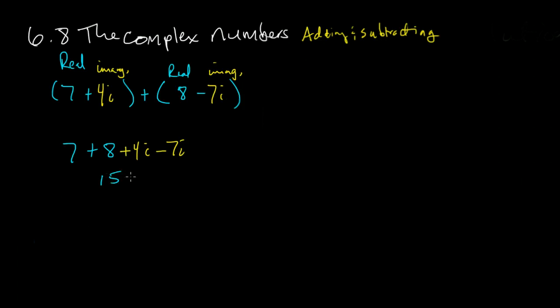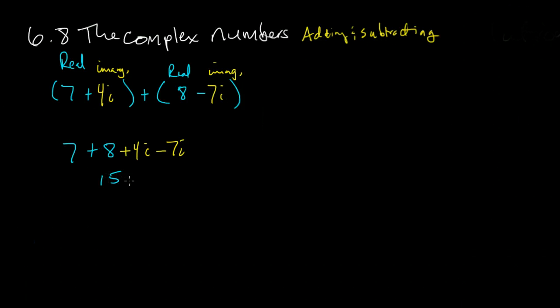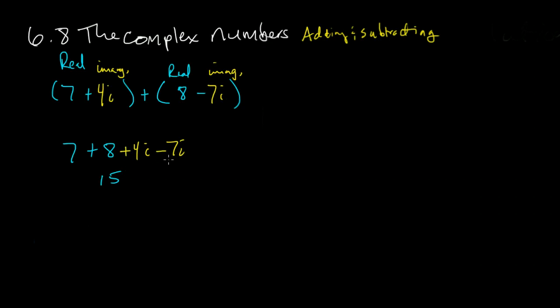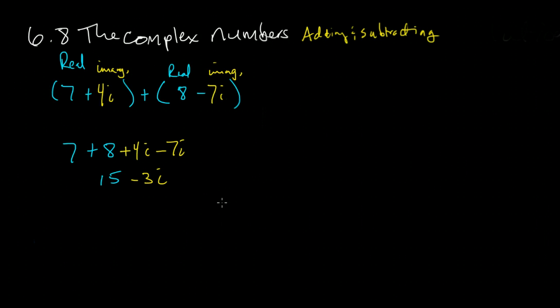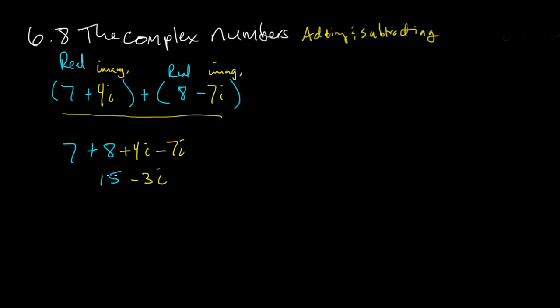And so it's a lot easier to look at them this way and say, well, 7 plus 8 is 15, and that'll be positive 4 minus 7 is minus 3i. So my solution to this addition is 15 minus 3i.